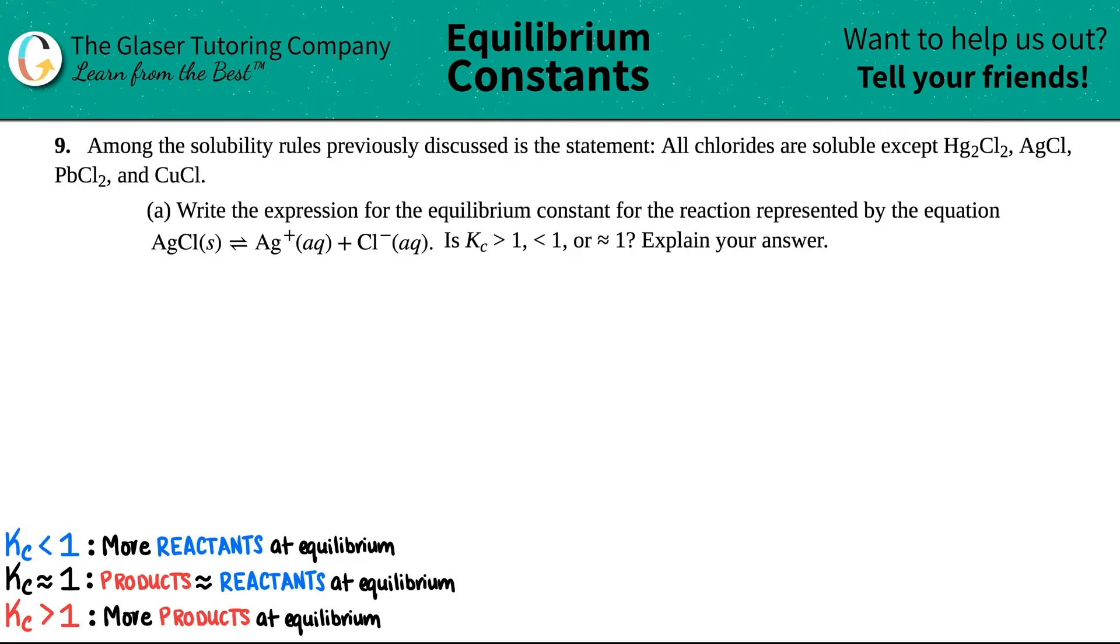Number nine. Among the solubility rules previously discussed is the statement, all chlorides are soluble except Hg2Cl2, AgCl, PbCl2, and CuCl.